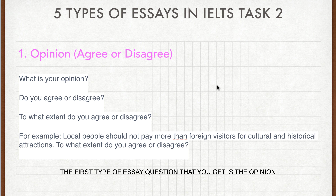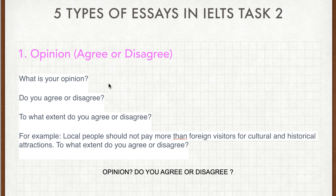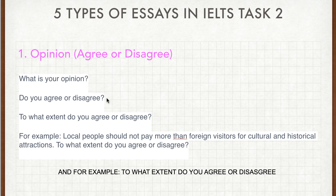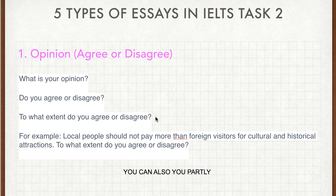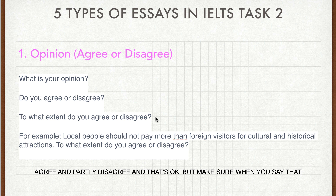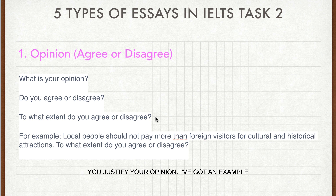The first type of essay question you can get is the opinion question. This is where they ask you to say what is your opinion — do you agree or disagree? For example, they might say 'to what extent do you agree or disagree?' So you can say how much you agree or disagree. You can also partly agree and partly disagree, and that's okay.